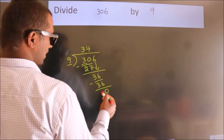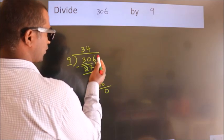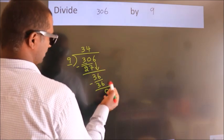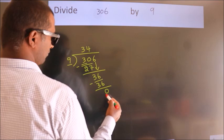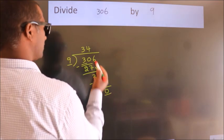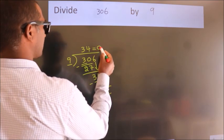After this, no more numbers to bring it down, and we got remainder 0. So, this is our quotient.